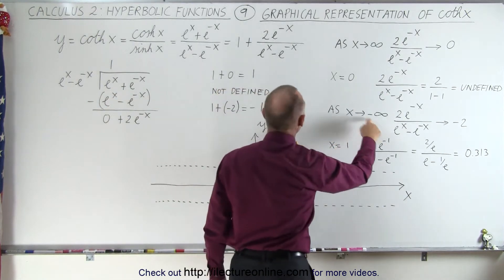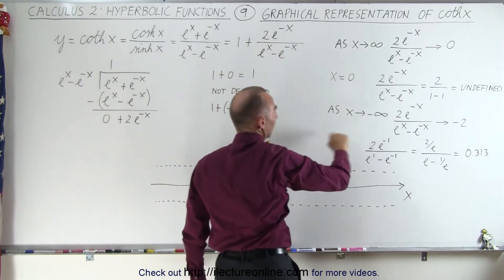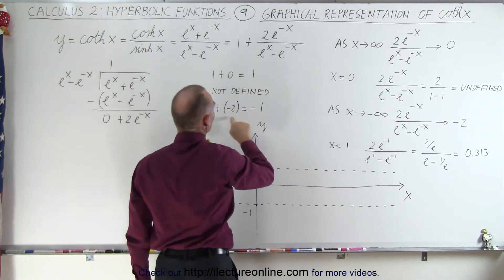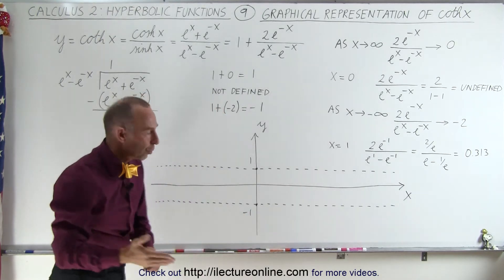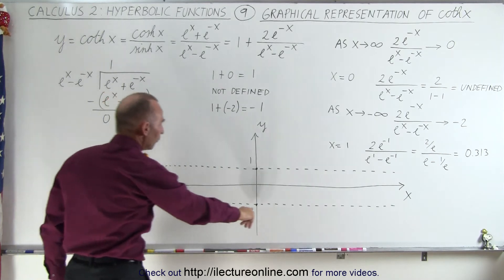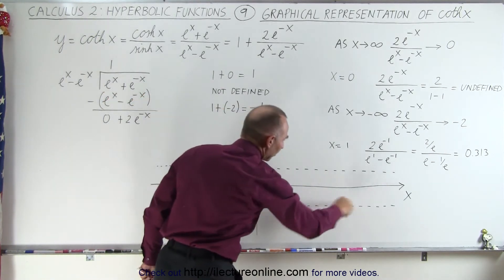As x approaches minus infinity, when we evaluate this fraction, we get minus 2. So 1 plus minus 2 gives us minus 1, which means as x approaches negative infinity, we asymptotically reach y equals negative 1. We draw another asymptote there.